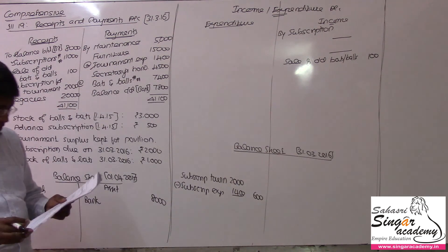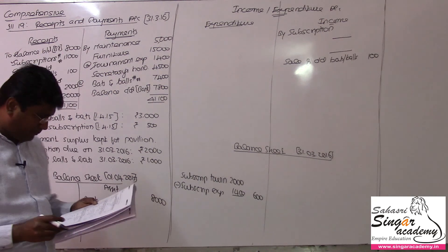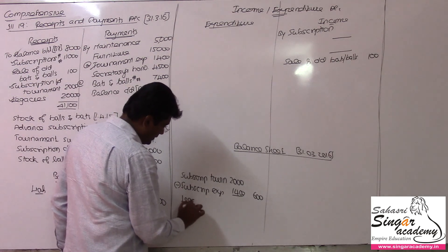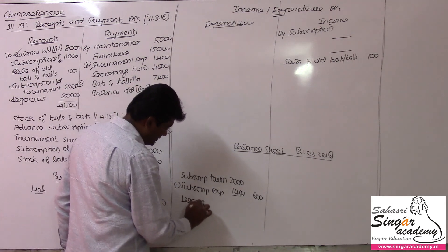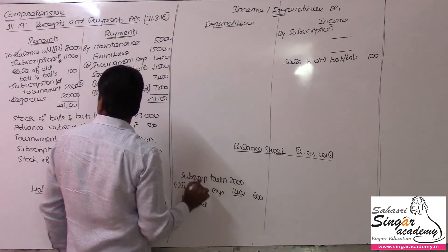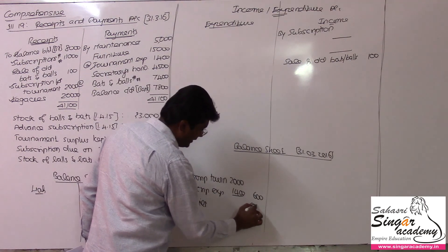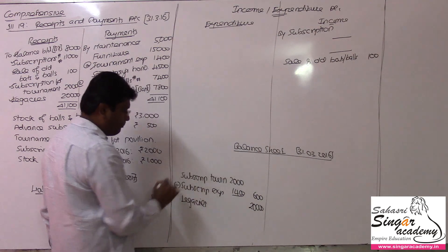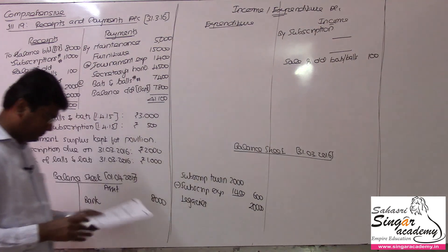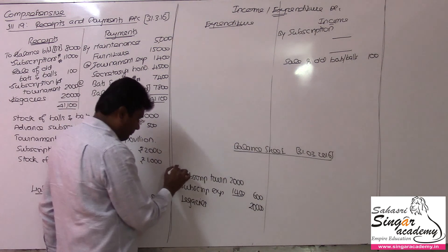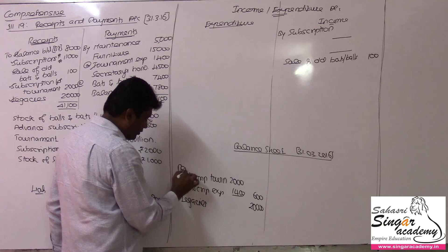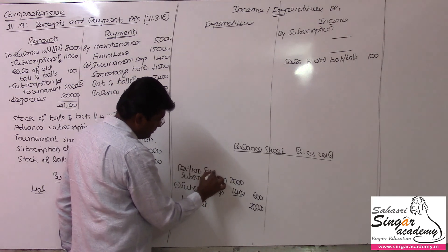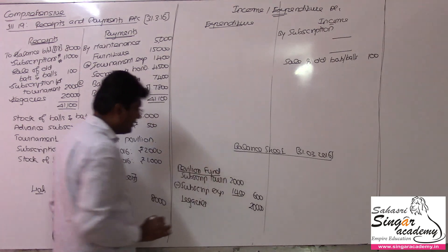Legacy — as discussed in the previous class, legacies are usually capitalized. This legacy of 20,000 rupees is capitalized to the fund. This is for the pavilion fund and goes to the balance sheet as pavilion fund.